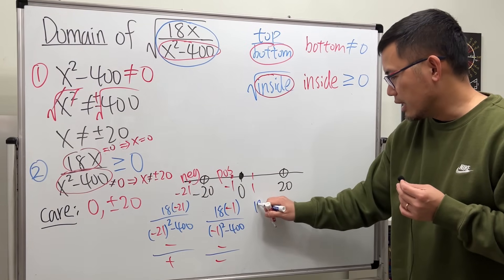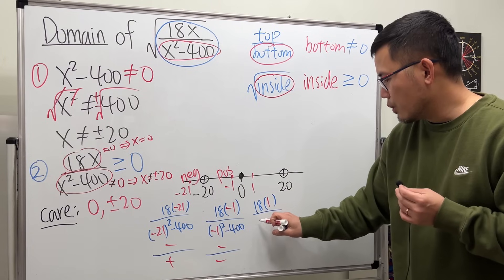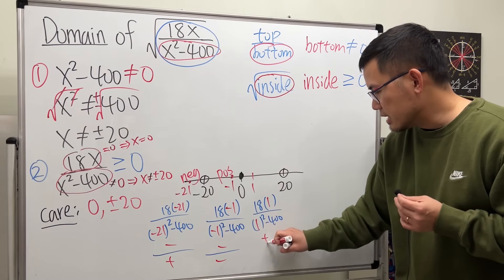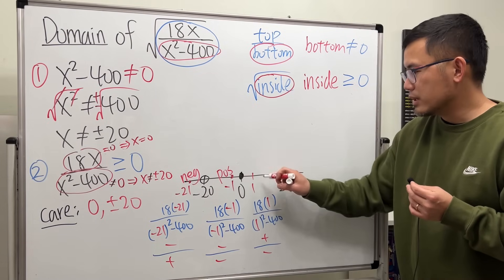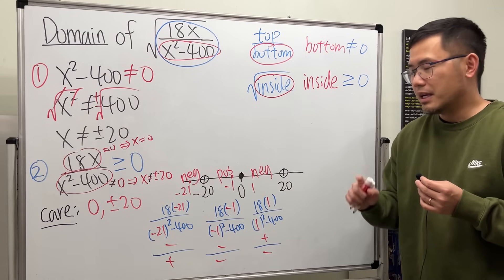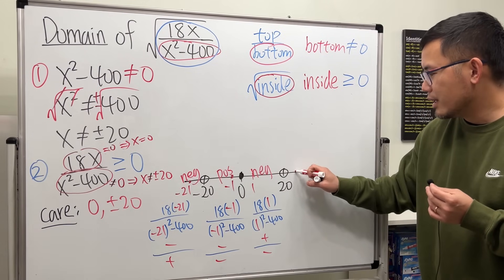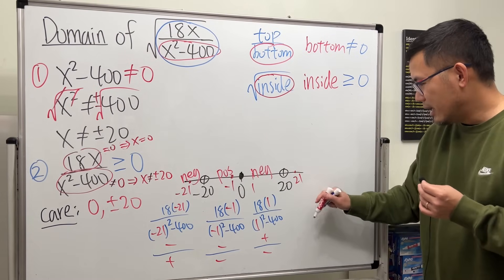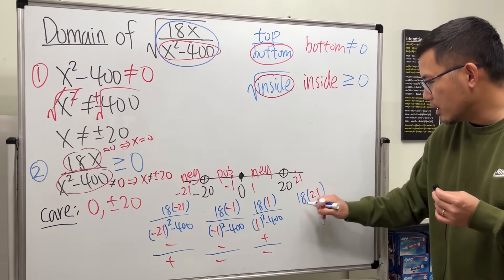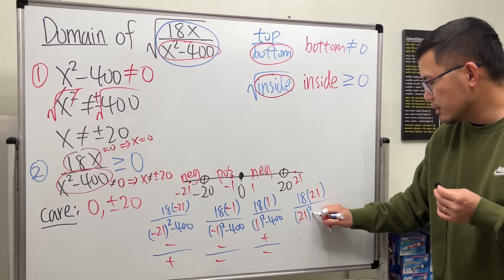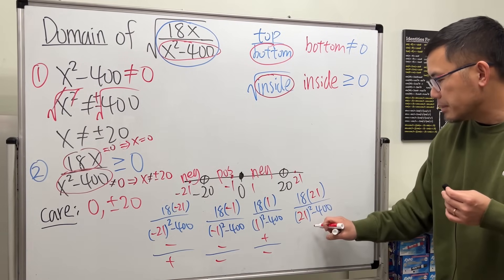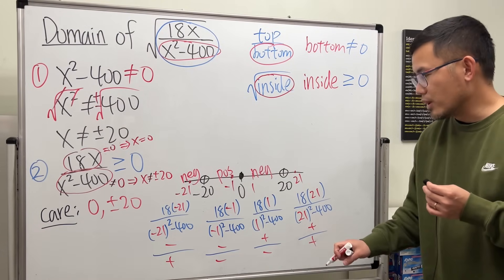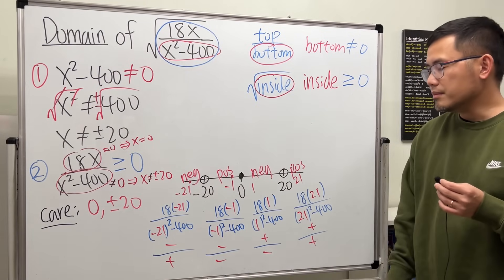Pick a number between zero and 20, say 1. The top is 18 times 1, which is positive. The bottom is 1 squared minus 400, which is negative. Positive over negative gives negative — we don't want that. Lastly, pick a number greater than 20, say 21. The top is positive and the bottom, 21 squared minus 400, is also positive. Positive over positive gives positive — this interval works.